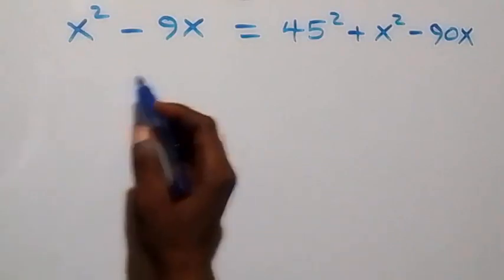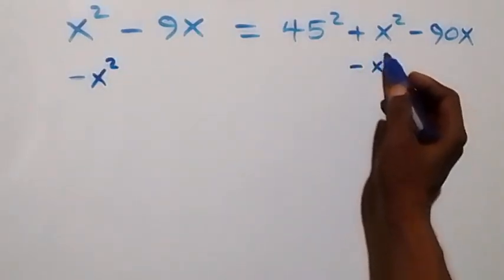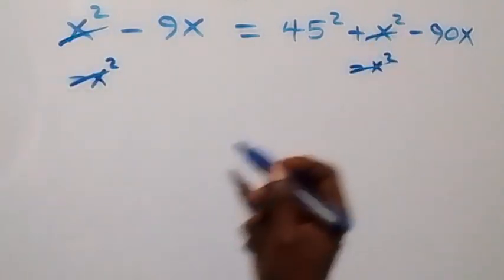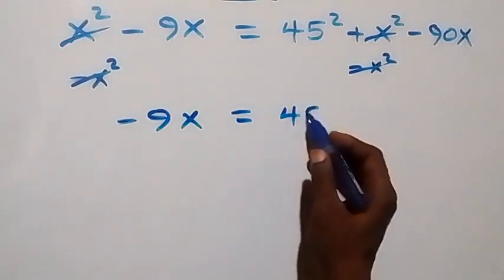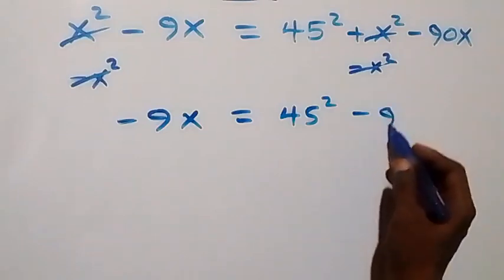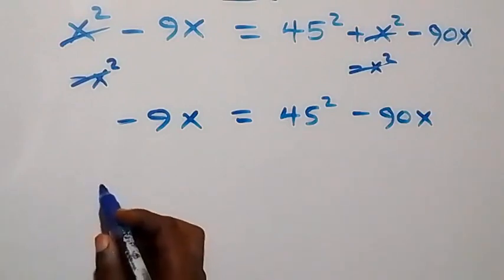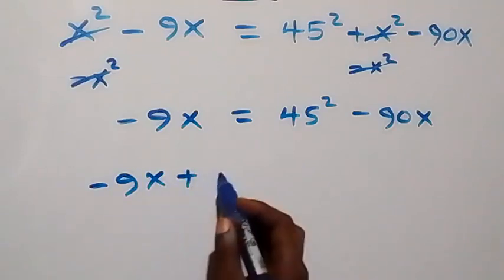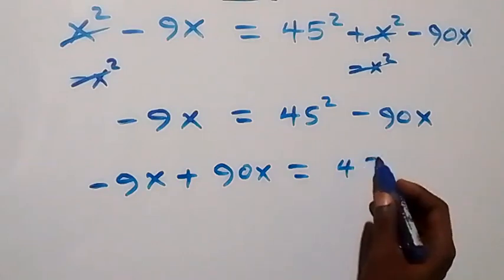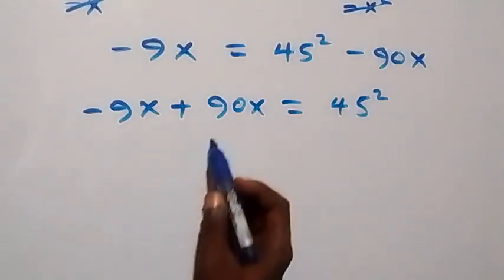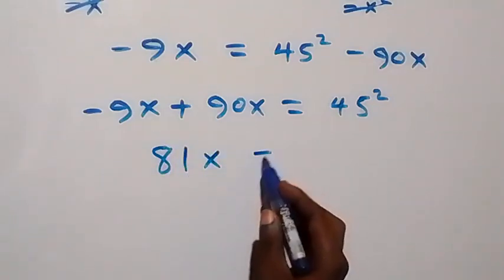We can subtract x squared from both sides so that x squared cancels out on both sides, and we are left with minus 9x equals 45 squared minus 90x. Bringing the x terms to one side: minus 9x plus 90x equals 45 squared, which gives us 81x equals 45 squared.